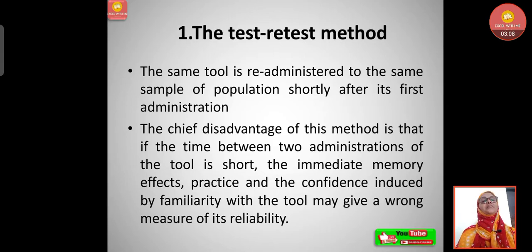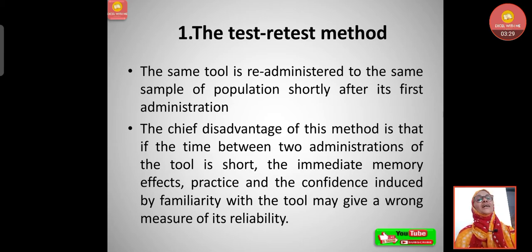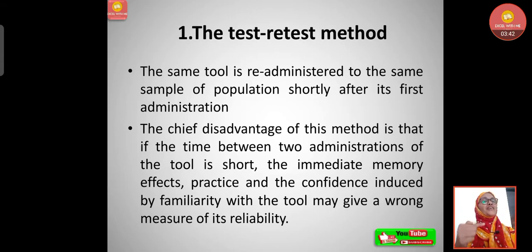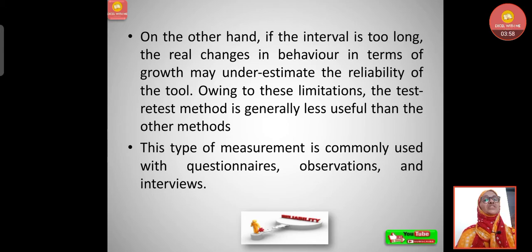There are four methods under reliability. The first is the test-retest method: the same tool is re-administered to the same sample shortly after its first administration. The chief advantage is consistency, but if the time between administrations is short, memory effects, practice, and familiarity may give a wrong measure of reliability. On the other hand, if the interval is too long, real changes in behavior may underestimate reliability. This method is commonly used with questionnaires, observations, and interviews.